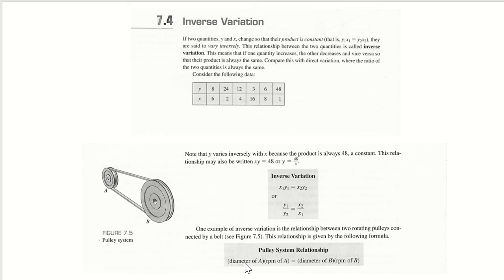And here is the relationship: diameter of pulley A to the RPM of A equals the diameter of B and the RPM of B.